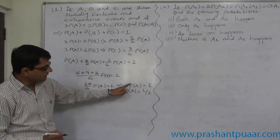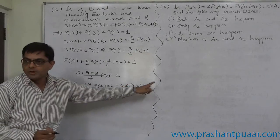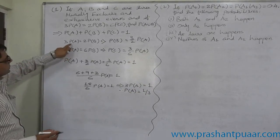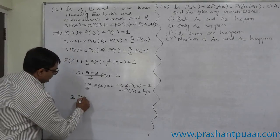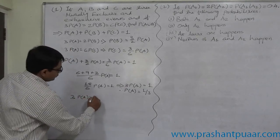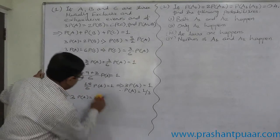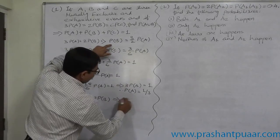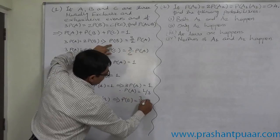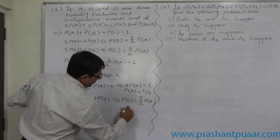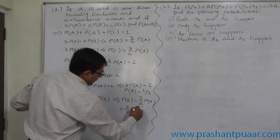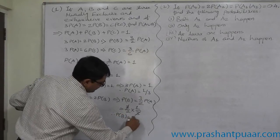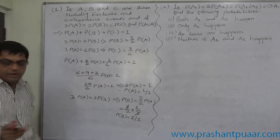So ultimately 3P of A equals 1, and therefore P of A equals 1/3. Now we know P of A equals 1/3, and we have the relationship 3P of A equals 2P of B, which means P of B equals 3/2 into 1/3. Therefore P of B equals 1/2.